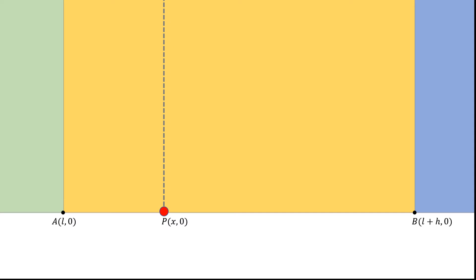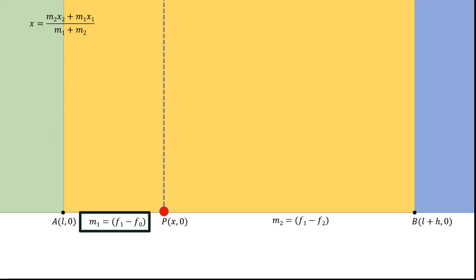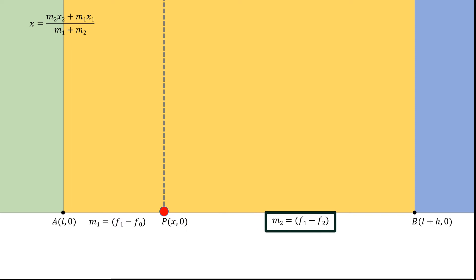Here, point P divides line segment AB internally in the ratio (F₁ − F₀) : (F₁ − F₂). To get the x-coordinate of point P, we will use the section formula, which is: x = (M₂·x₁ + M₁·x₂) / (M₁ + M₂). Here, M₁ = F₁ − F₀ and M₂ = F₁ − F₂.